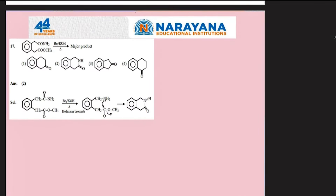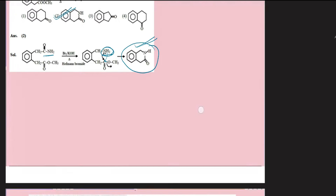A question from organic chemistry. The first reaction is a Hofmann bromamide reaction where an amide converts into an amine. The amine formed then reacts with an ester in a nucleophilic acyl substitution reaction, resulting in formation of another amide. A cyclic secondary amide is formed as the final product. The correct answer is the second option.